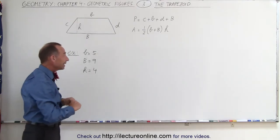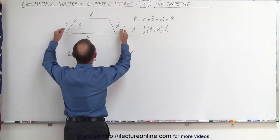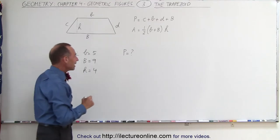Right away you realize that you cannot find the perimeter because you were not given the two sides c and d, so the perimeter will remain unknown. But we can find the area.